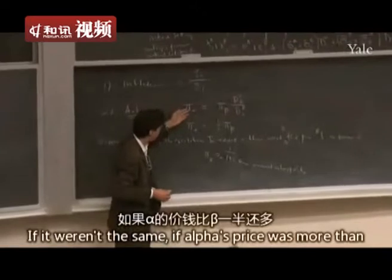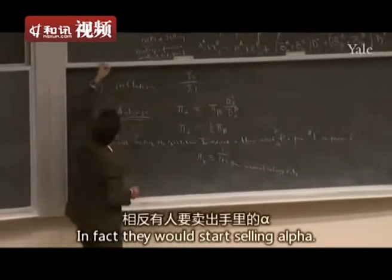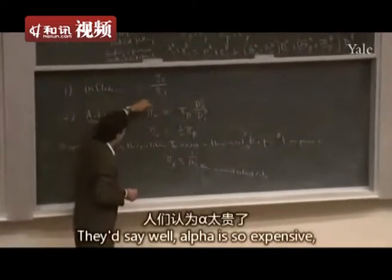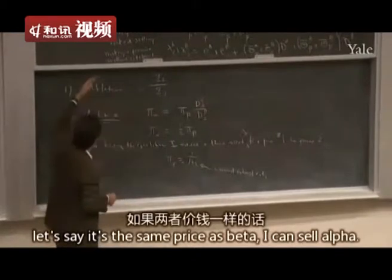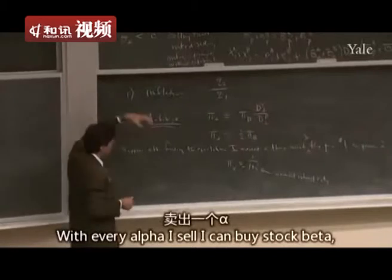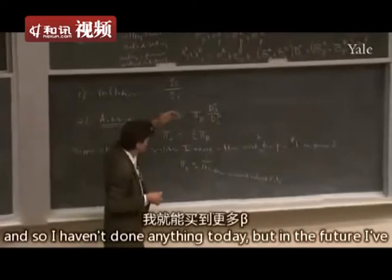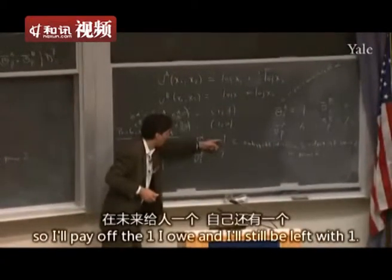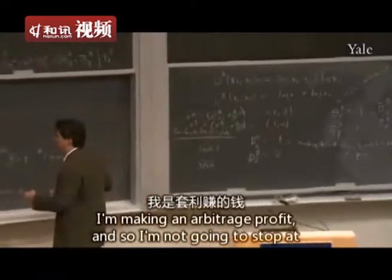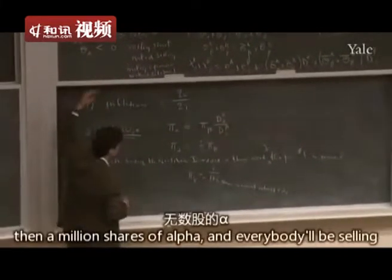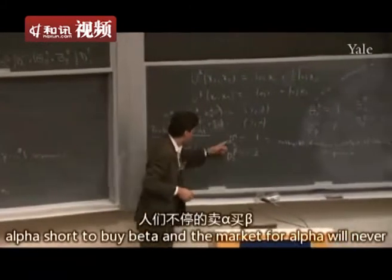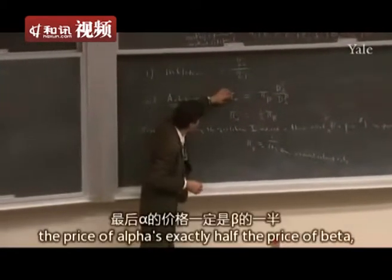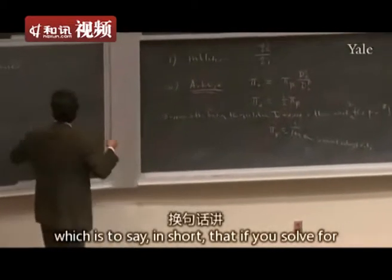If alpha's price was more than half of beta's, nobody would buy alpha — in fact, they'd start selling it. They'd say: alpha is so expensive, let's say it's the same price as beta. I can sell alpha; with every alpha I sell, I buy stock beta. I haven't done anything today, but in the future I've got beta paying me two, I owe one from selling alpha short, so I'll pay off the one and still be left with one. That's an arbitrage profit. I won't stop at one share — I'll sell two, three, a million shares of alpha. Everybody will be selling alpha short to buy beta, and the market for alpha will never clear. That's why prices must adjust — in equilibrium the price of alpha has to be exactly half the price of beta.